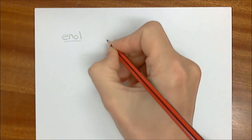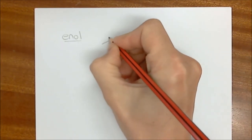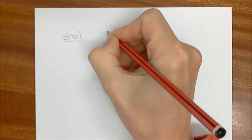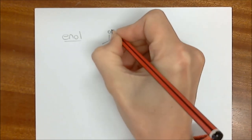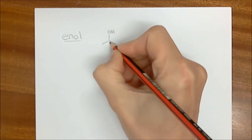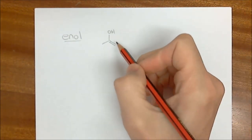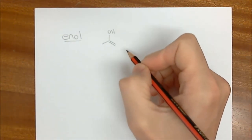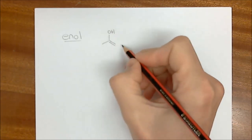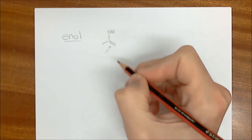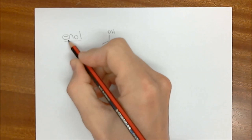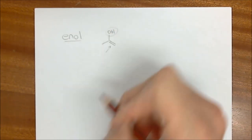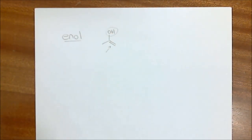An enol is actually this — I'll give you an example of what an enol looks like in a very simple sense. A molecule like this doesn't actually exist in very large amounts, but the enol is this functional group. It's an alkene — the 'ene' — and this OH, which looks like an alcohol — 'ol'. So that's where we get the name enol.